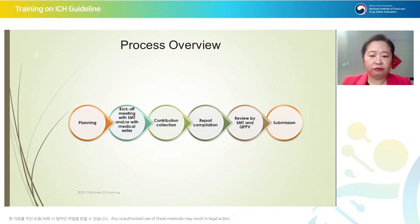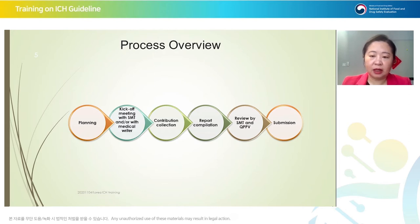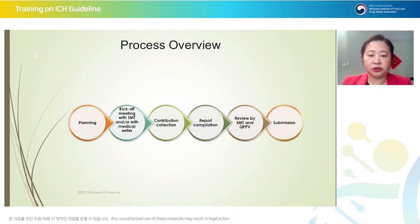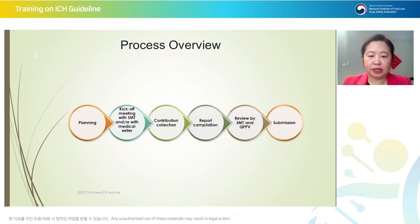After receiving all data from different functions, you start writing the report. After the report is compiled and the draft is ready, we send it to the safety management team for review, and some companies require a QPPV review. Then the report is ready for submission. This process applies not only to PBIR or DSUR — it can be used for many aggregate data reports, such as addendum to clinical overview, risk management plan, or other aggregate reports.